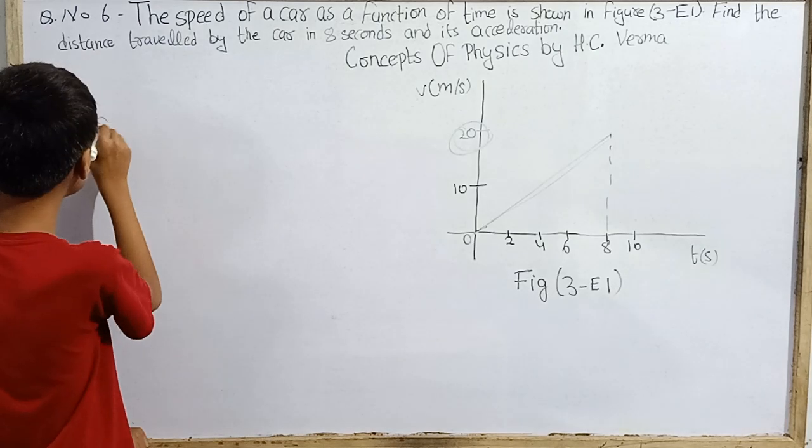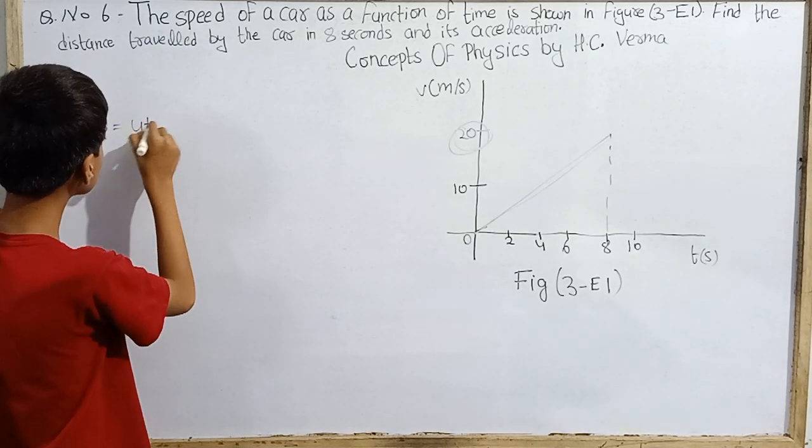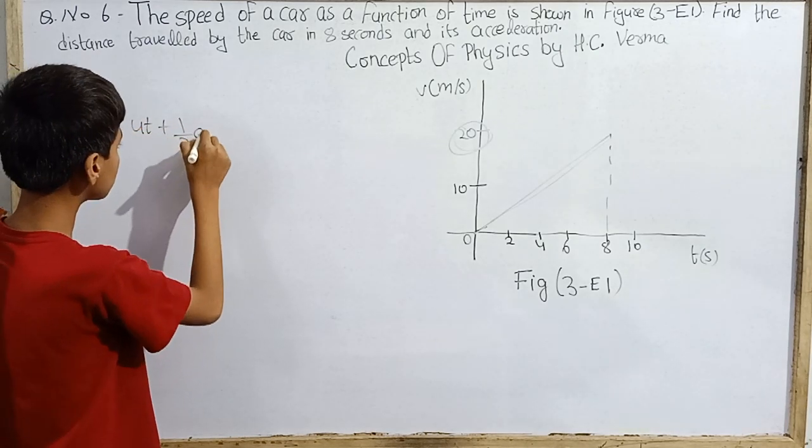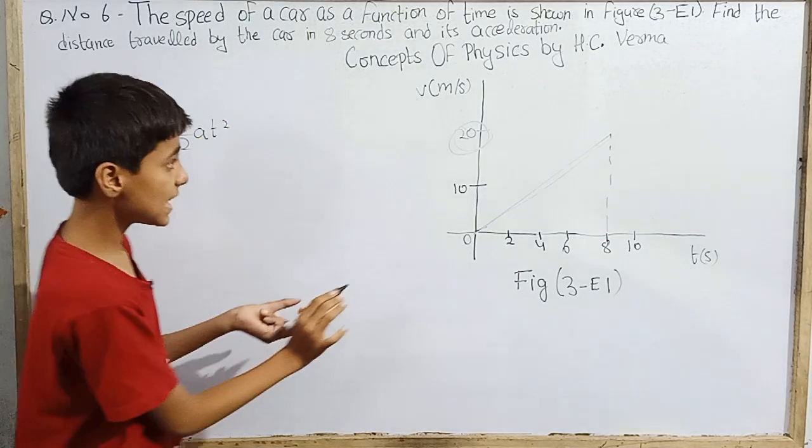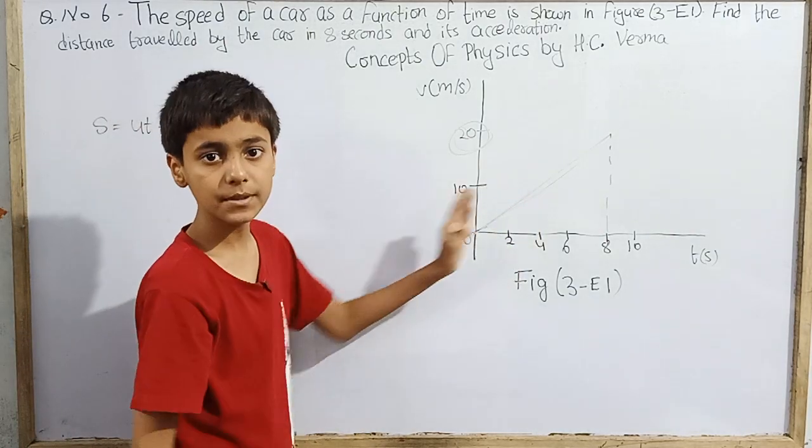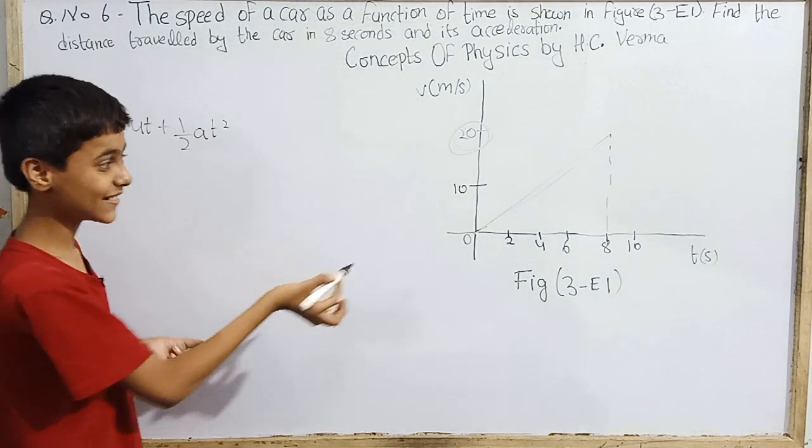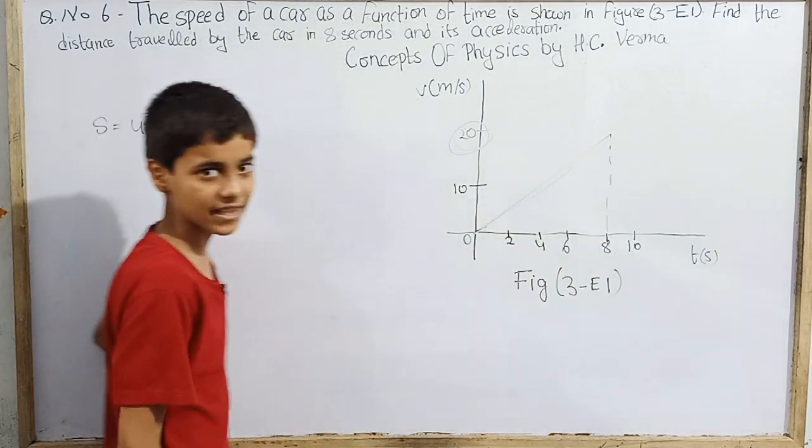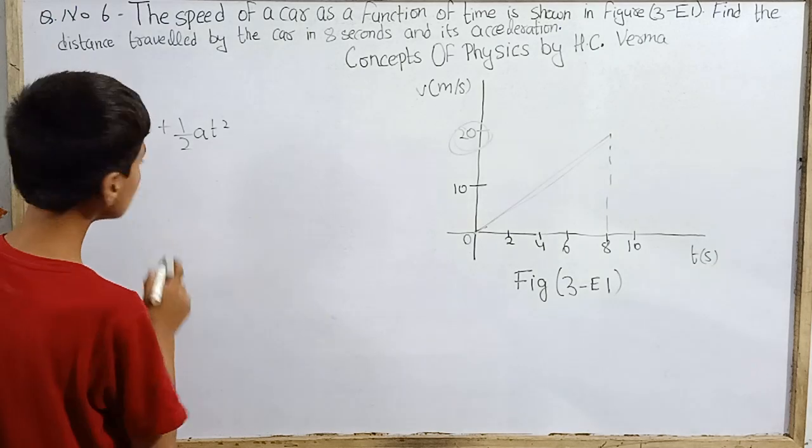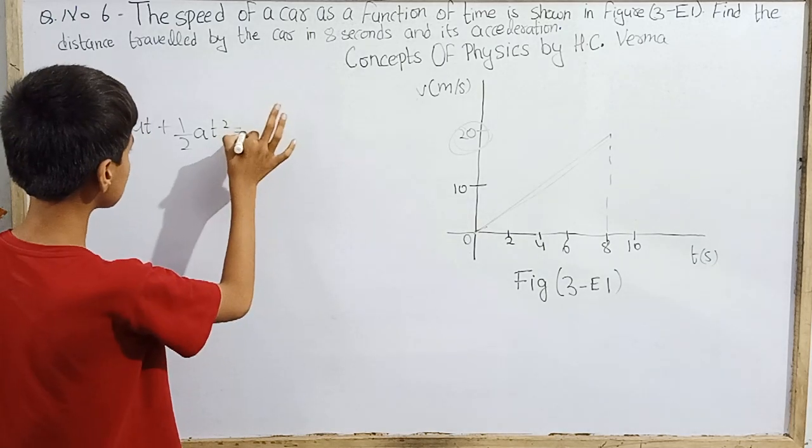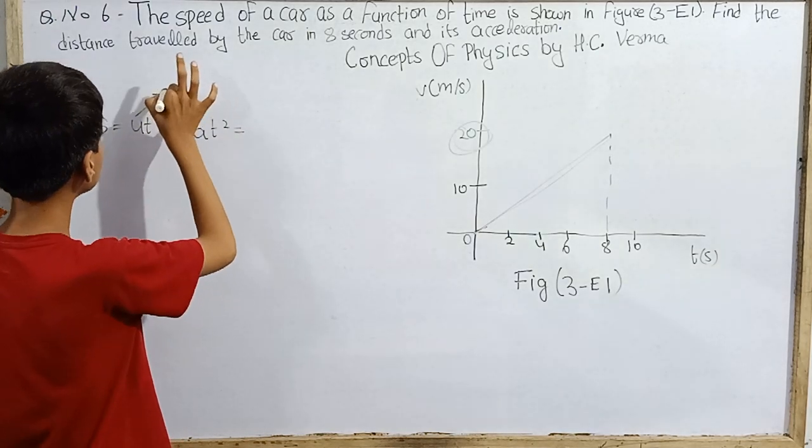Let's go. Distance travelled is s equals ut plus half a t square. Since it is a matter of speed, we can directly be using speed at the place of those quantities, and particle also is moving in the positive direction of x axis.